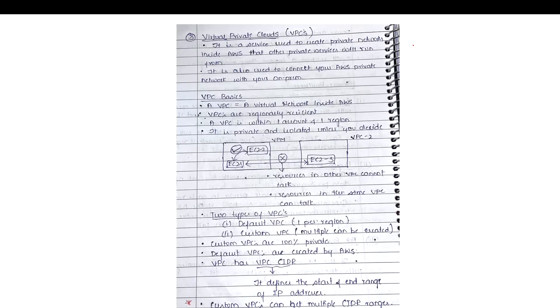VPCs are regional resilient. If you don't know what regional resilient means, I've talked about this in my day one video — I'll drop the link in the description below. To give you the gist: this VPC service will continue to operate even if an availability zone fails, but if the entire region goes down then it will not operate. That is the meaning of regional resilient. For every region there will be a separate VPC.